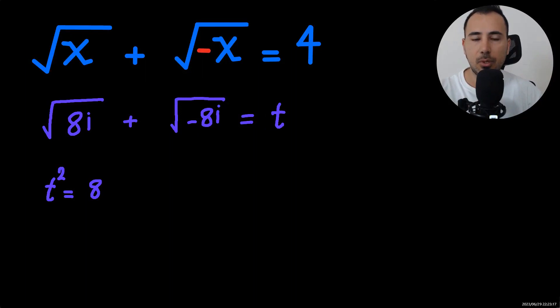It was a squared, which is going to be 8i, b squared, we saw previously, it's going to be negative 8i, and plus 2ab, it's going to be plus 2 times ab, square root of 8i multiplied by square root of negative 8i.